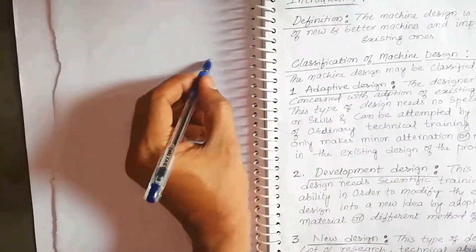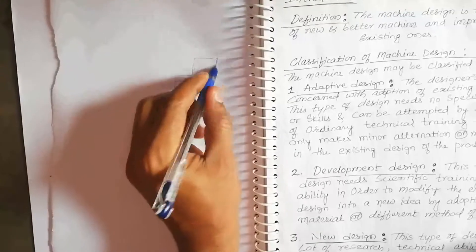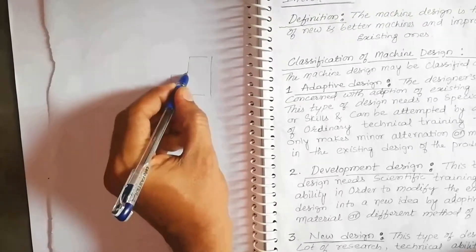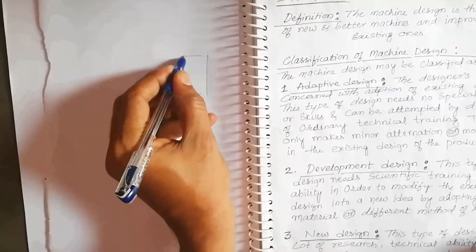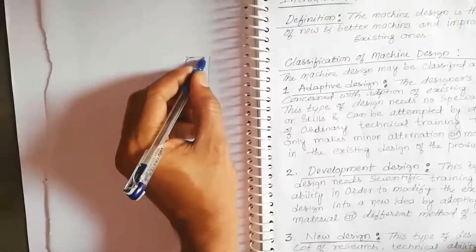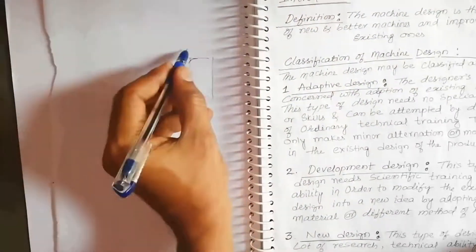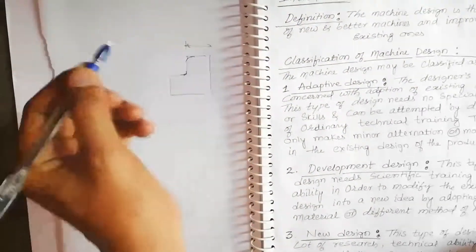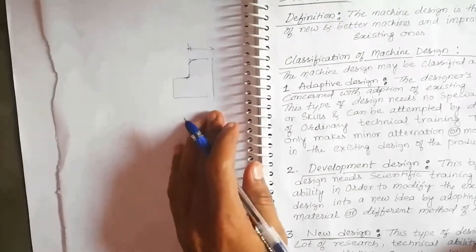Suppose if you have one element, you just make a small alteration like changing a sharp edge into a curve or changing the dimensions of any product. Like that, adaptive design happens.